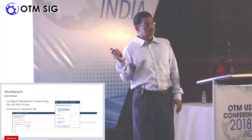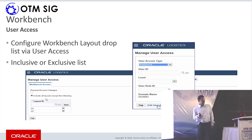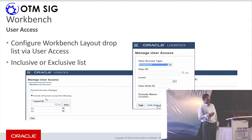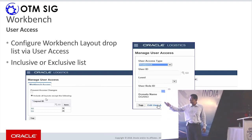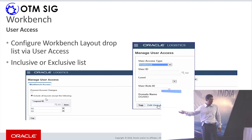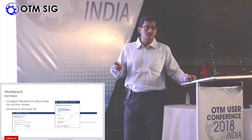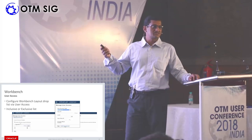Similar to how user access can be defined for global search at an object or screen set level, we have now introduced workbench layout as an option in user access. You can specify which workbench layouts a certain user or role can access — for example, include all layouts except certain ones. This follows the same user management pattern used for other business functions.